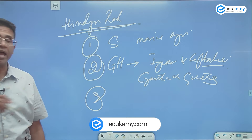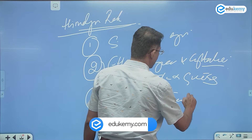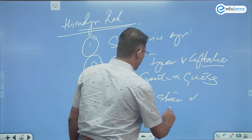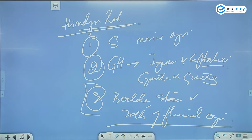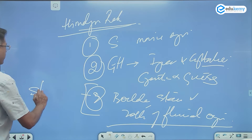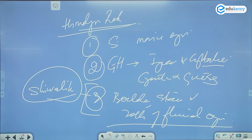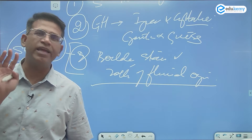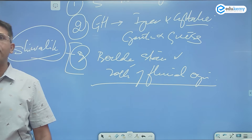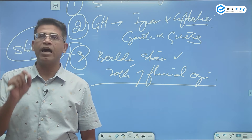We also have boulders, stones, and rocks of fluvial origin in the Shivaliks. The Shivaliks are a very different type of range — they are uplifted foothills.